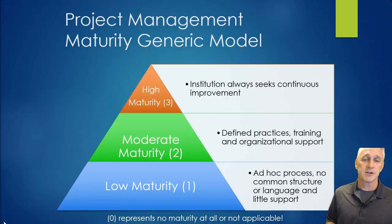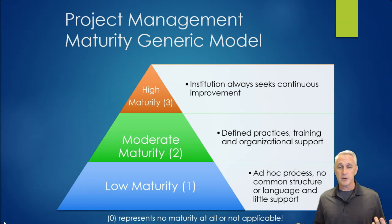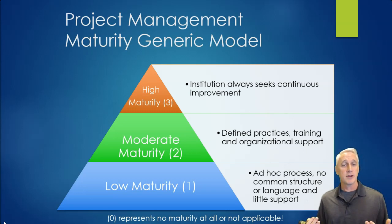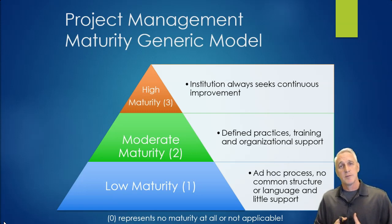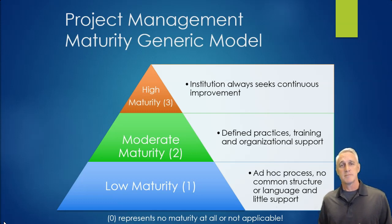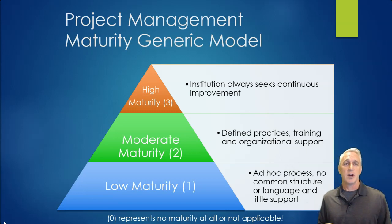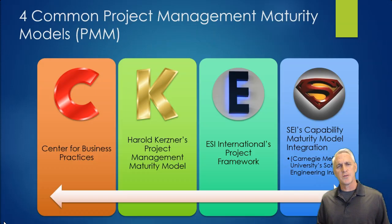The levels of zero through three go from zero — meaning you're not doing anything in that category — to low maturity, where you have an ad hoc process with no real common structure and little language or support. Moderate level means you have some defined practices, training, and organizational support. Many medium to large companies fall somewhere in that range. It takes a concerted effort of the entire organization to reach high maturity, where the institution is always seeking continuous improvement on projects.